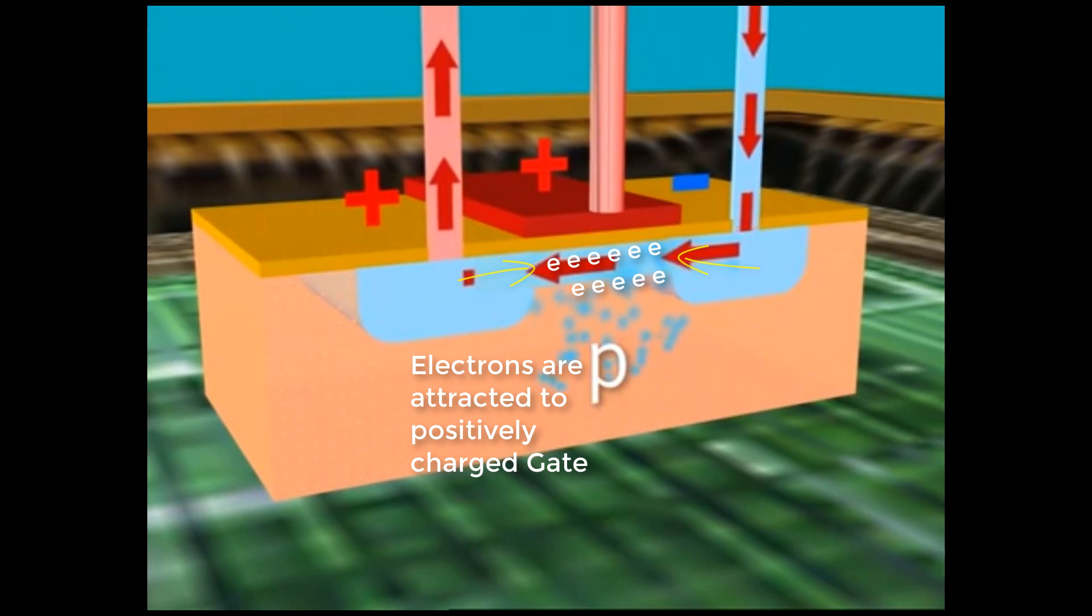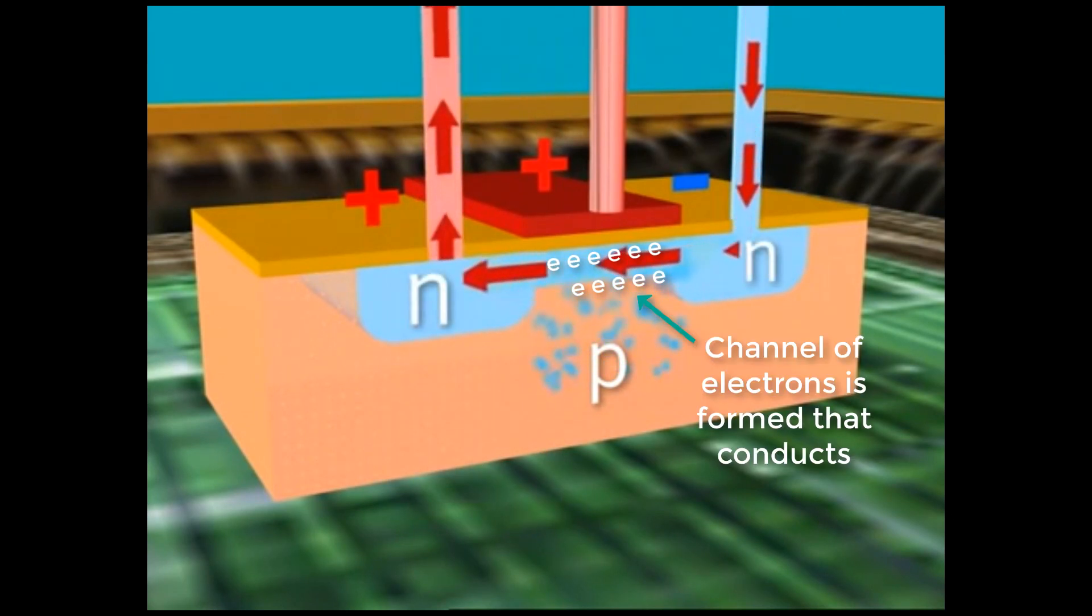The electrons from the P layer now wander toward the middle connection and accumulate at the border area between the silicon crystal and the insulation gate oxide. A channel through which the electrons can flow is formed between the islands of N conductive material. The electrical circuit is closed.